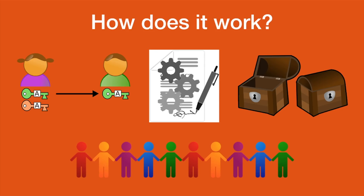Does this mean everybody needs a payment channel with everyone they want to transact with? No. For example, if Bob wants to buy pizza at the local pizza shop but doesn't have a channel with the pizza shop, and his peer Alice does, the payment can route from Bob to Alice via their channel, and then from Alice to the pizza shop via their channel. That's what is meant by a network of payment channels.